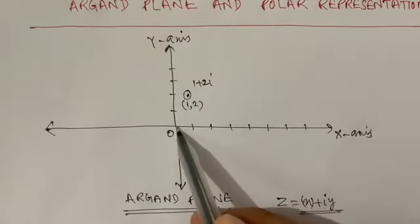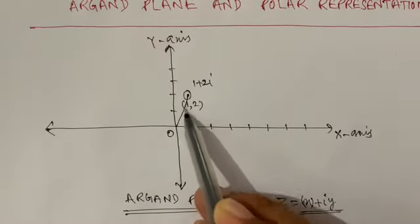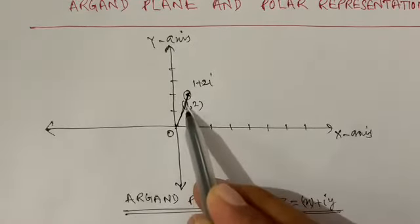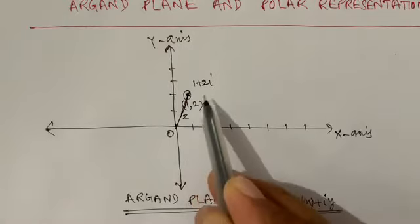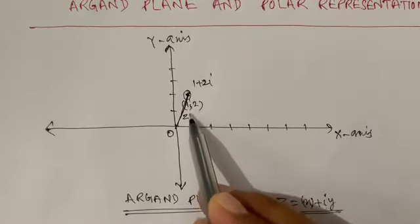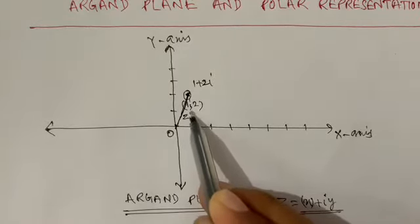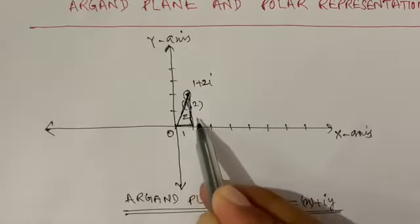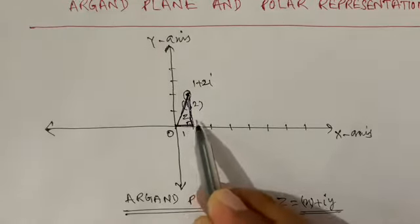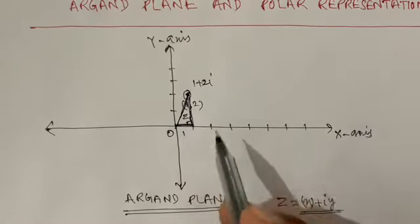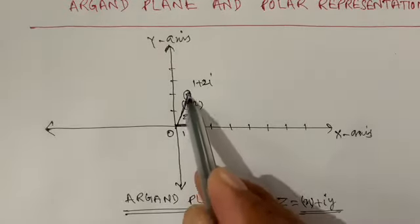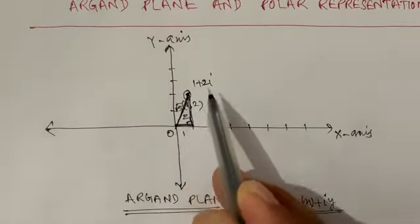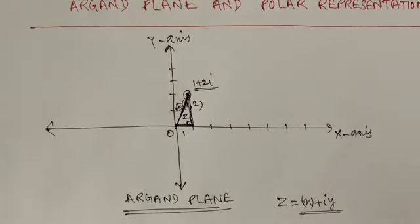The origin plays an important role. When we join the origin to the point, the magnitude of that line is the magnitude of the complex number. You can verify this by dropping a perpendicular. You get a right-angle triangle with sides 1 and 2. So 1² + 2² = 5, and taking the square root gives √5, which is indeed the magnitude.